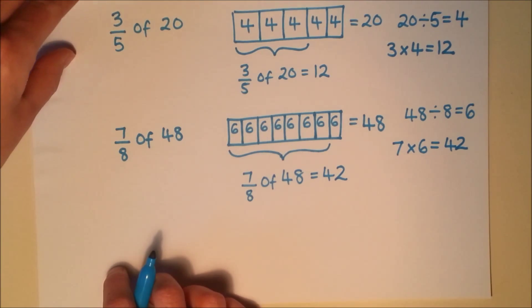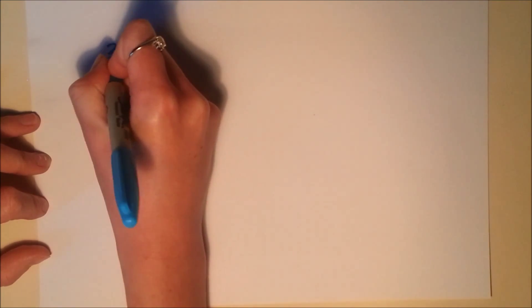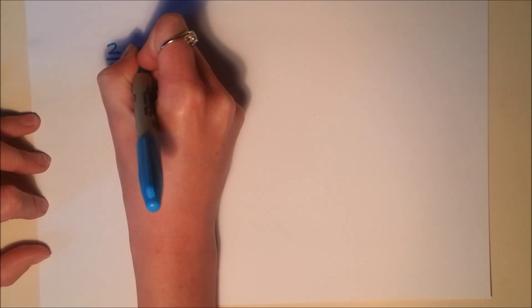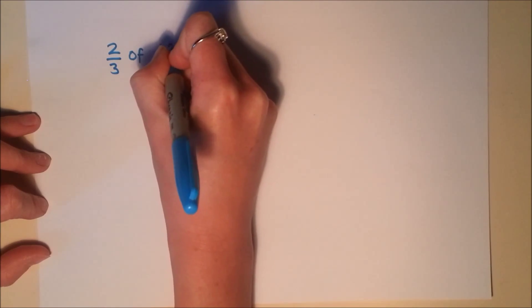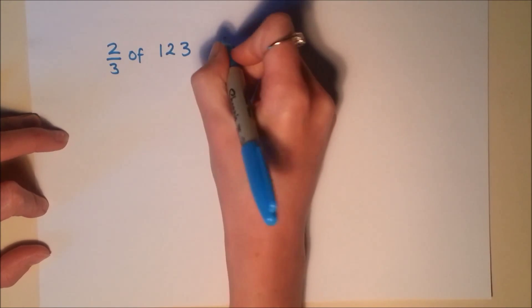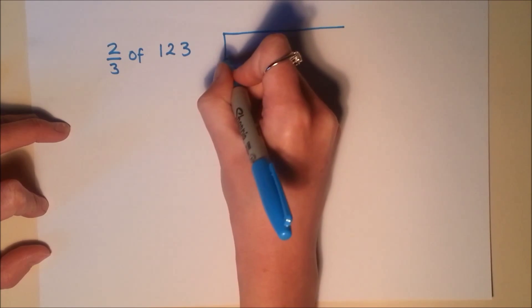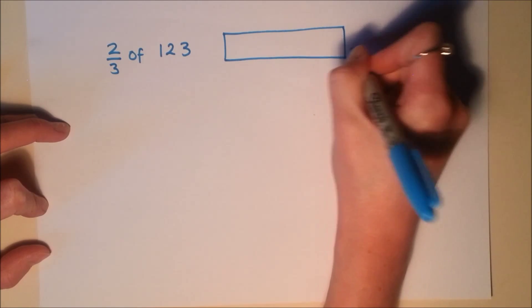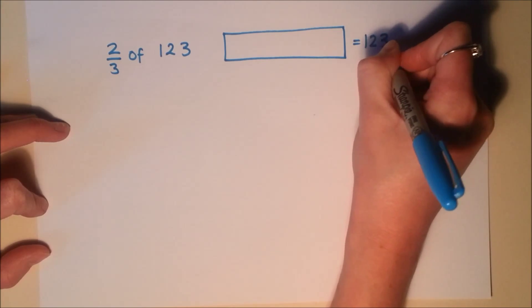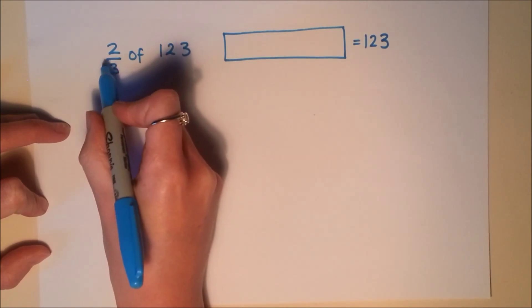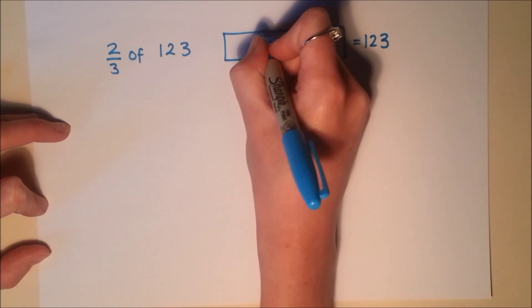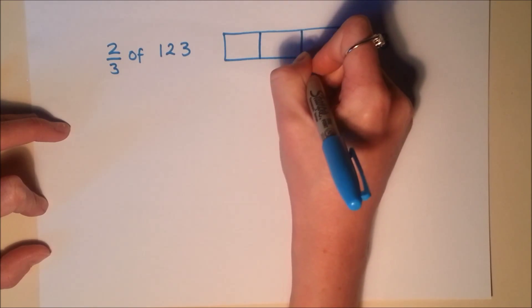Now, sometimes you might need to use some of the other math skills as well. So if the numbers are particularly big, you might need to use multiplication and division strategies. So we'll look at something like 2 thirds of 123. So my full amount here. Big number this time. That's worth 123. My denominator is 3. So I'm going to split that into 3 equal parts.